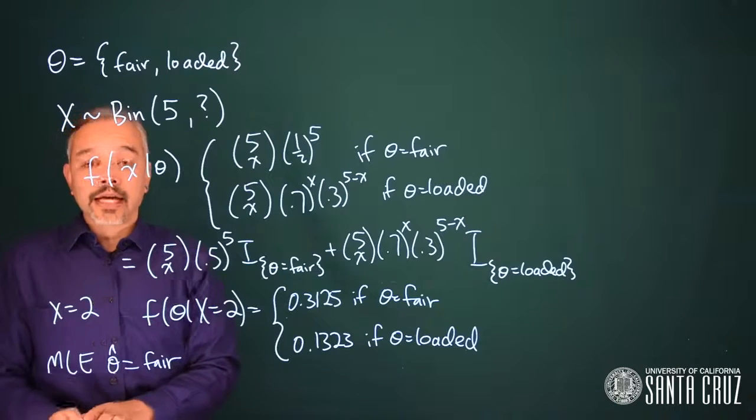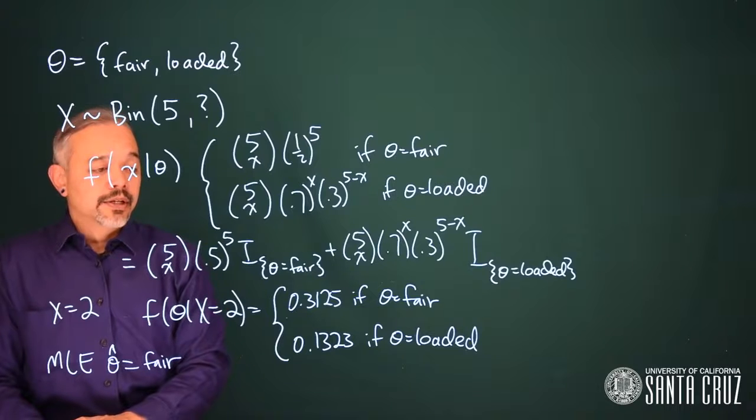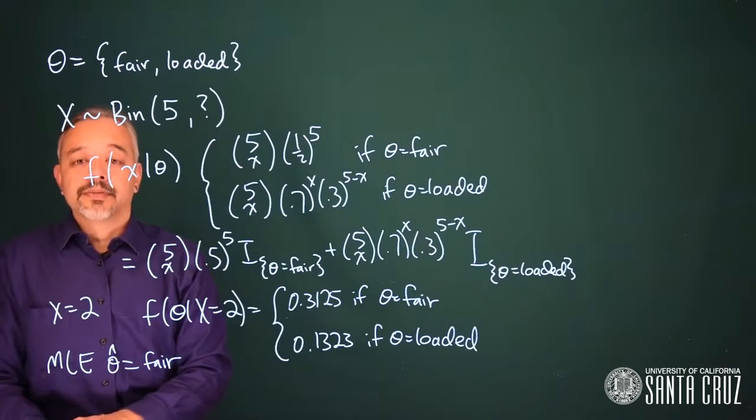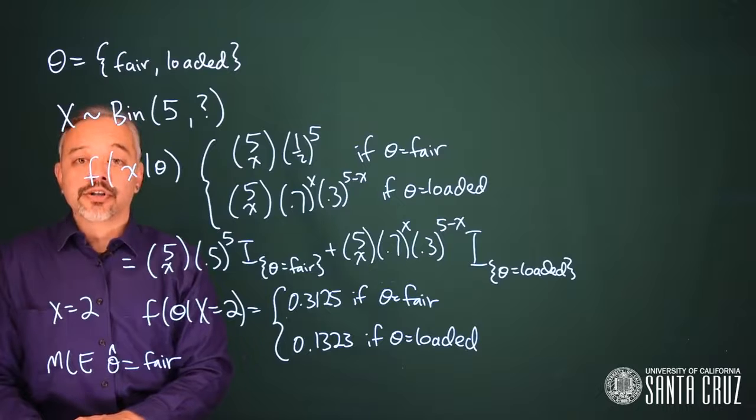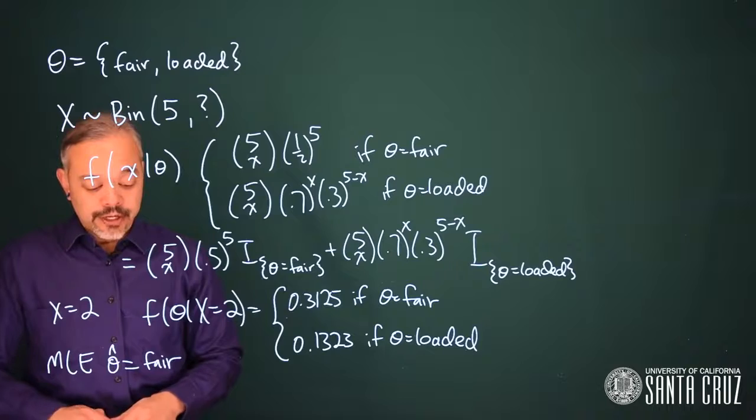Given the data, it is most likely that the coin is fair. That's a good point estimate, but then how do we answer the question, how sure are you? This is not a question that's easily answered in the frequentist paradigm.